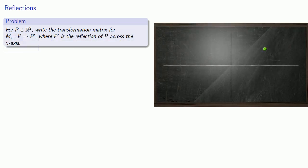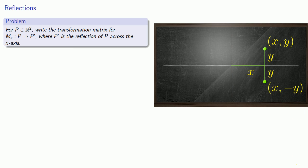Remember, if I have a point with coordinates (x, y), the coordinates tell me how to get to the point from the origin. We go x units horizontally and then y units vertically. Now, when we reflect this point across the x-axis, the actual vertical distance is still y, but because we're going down instead of up, our coordinates are going to be (x, negative y).